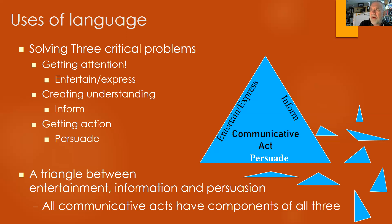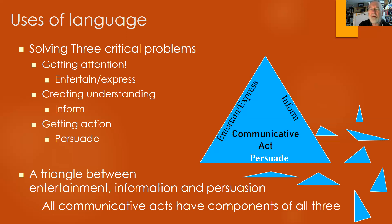We can think of these three as a triangle. In every communicative act, in every effort to communicate, you have to address all three of these. If they are not all three present, you actually don't have an act of communication. One side is to entertain or express — to get attention. Another side is to inform — to create understanding. And last, it must persuade — get some sort of action. The triangle can have many different shapes; something can be primarily about entertaining, informing, or persuading. But it must still carry out the other two functions, or it gets ignored.